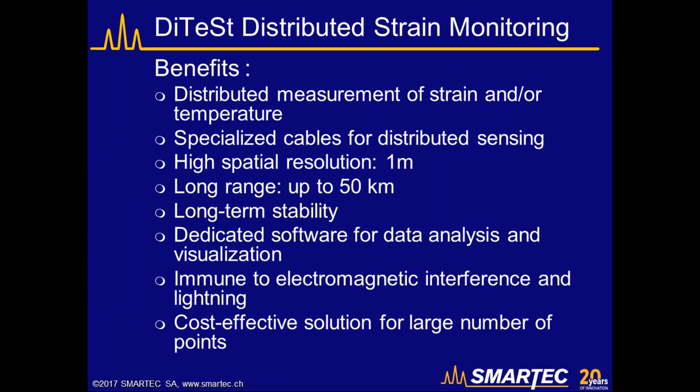The benefit of this solution is that it can measure strain and temperature using a specialized distributed sensing cable with a spatial resolution of one meter, meaning we can localize events with one-meter accuracy over a range of up to 50 kilometers. It has long-term stability for monitoring over many years, dedicated software for automatic detection, no electromagnetic interference or lightning sensitivity, and it is very cost effective where a large number of measurement points is required.